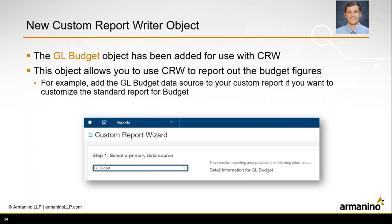A smaller addition is the new custom report writer object called the GL Budget, added for use in the Custom Report Writer (CRW). This new object allows you to use the custom report writer to report out your budget figures. For example, you can add the GL Budget data source to your custom report to customize the standard report that exists for your budget.